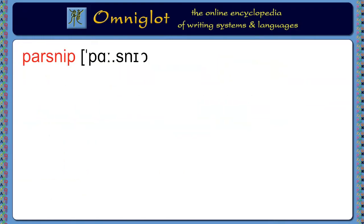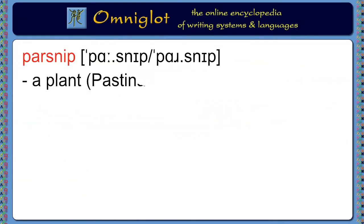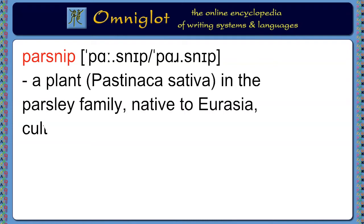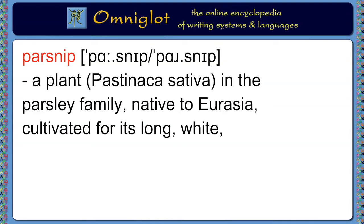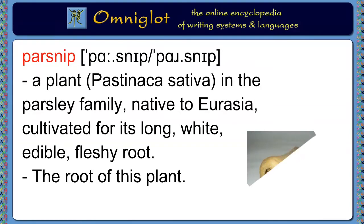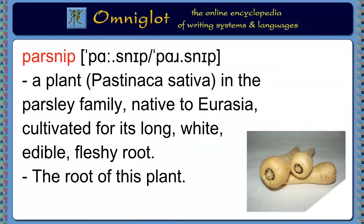Today we're looking at the origins of the word parsnip, which is a plant. Pastinaca sativa is the botanical name, in the parsley family, native to Eurasia, cultivated for its long, white, edible, fleshy root.